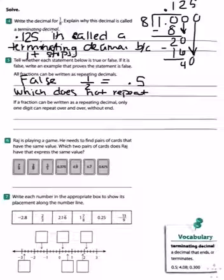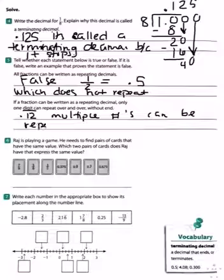The second one. If a fraction can be written as a repeating decimal, only one digit can repeat over and over without end. That is also false. We know that there are decimals that can repeat multiple numbers, like the repeating decimal 0.12. The fraction for 0.12 repeating would be 12 over 99.